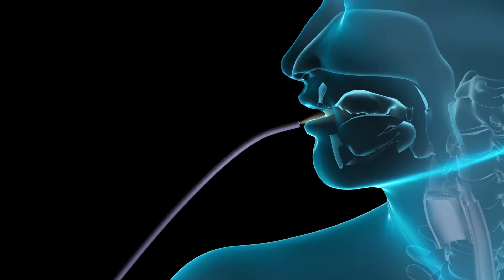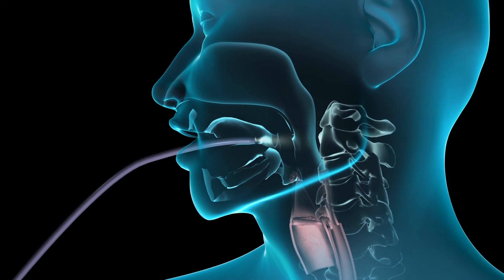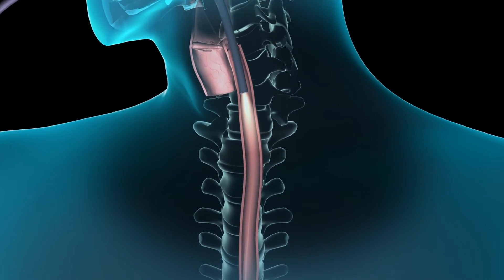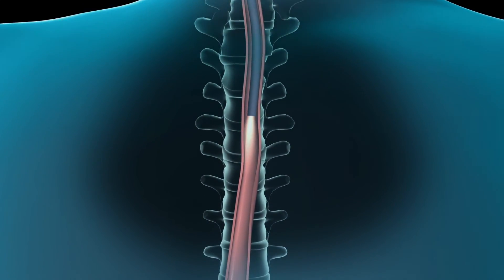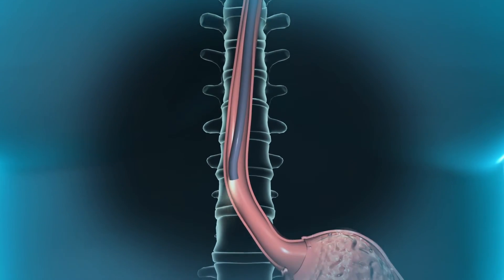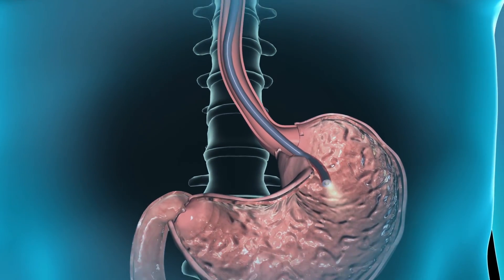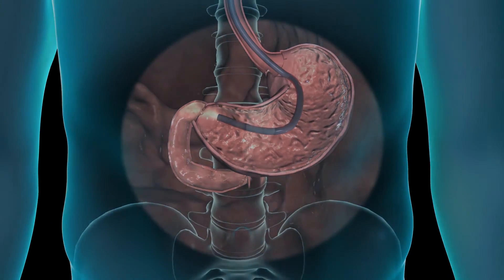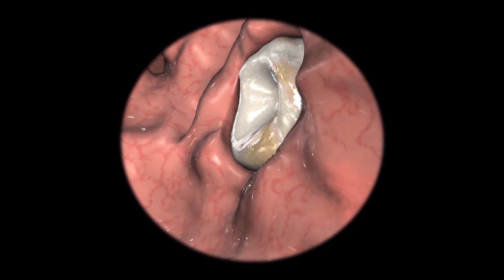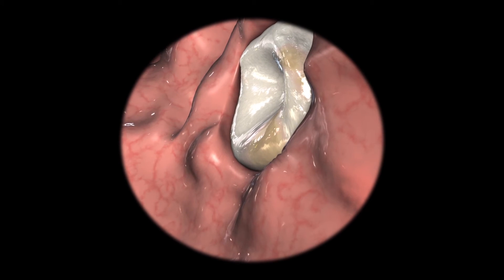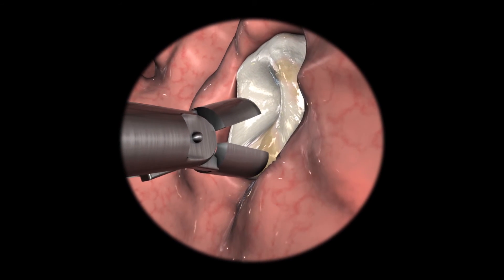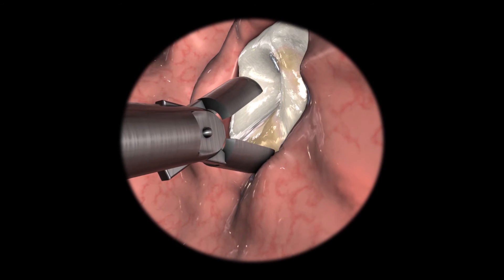Uncomplicated upper endoscopies take between 10 and 20 minutes. Your doctor will gently insert the endoscope through your mouth and then slowly and carefully move it down your esophagus until it reaches your stomach and finally your duodenum. You should feel no pain as this is happening. Your doctor may periodically introduce a small amount of air to flatten the mucosal lining and improve visibility.